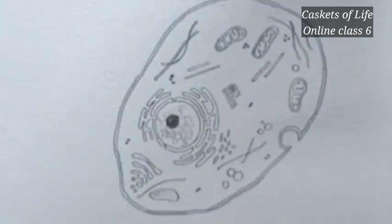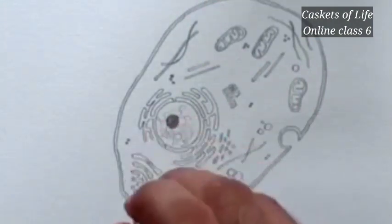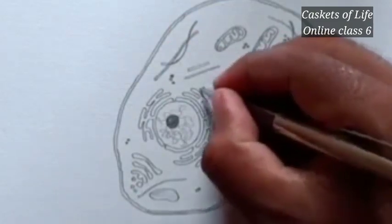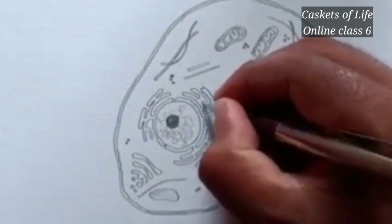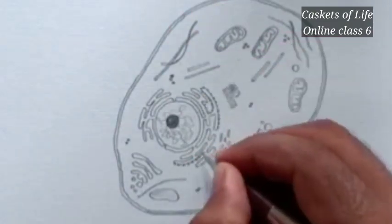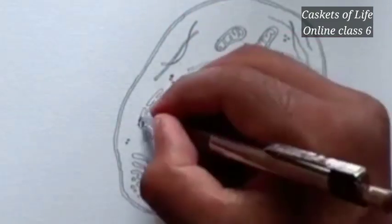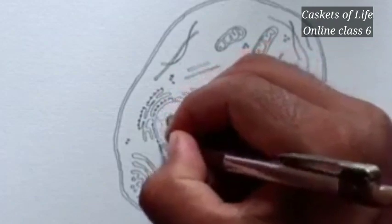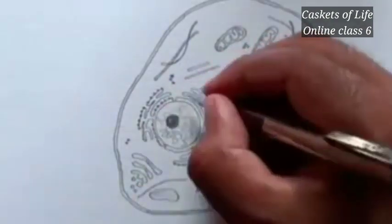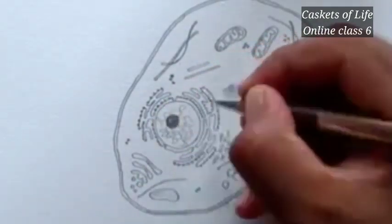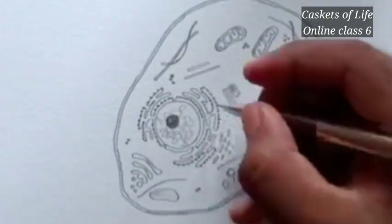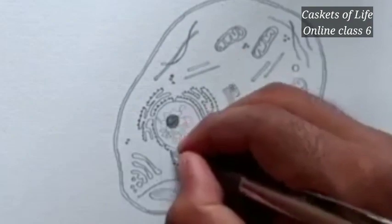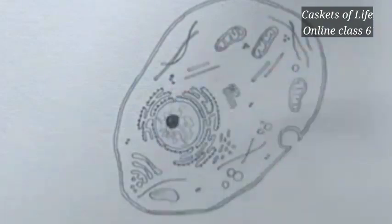Now the structure of an animal cell is almost completely drawn. Now you have to mark different parts of the animal cell.